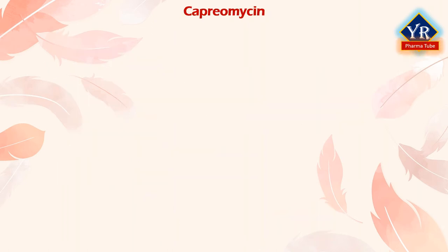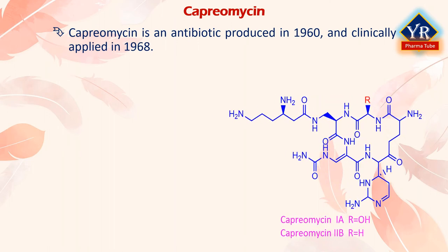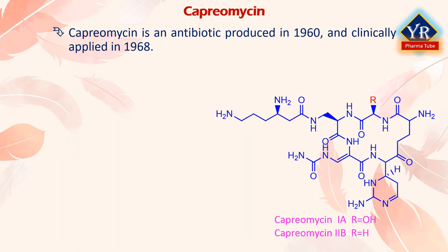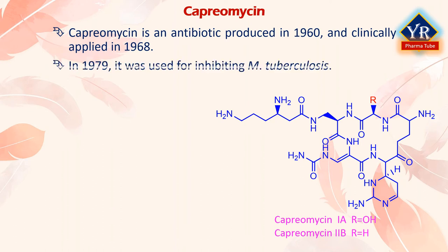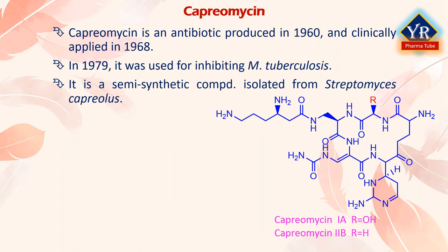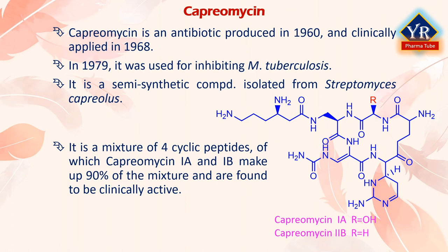The next drug is capreomycin. Capreomycin is an antibiotic which was produced in the US in 1960 and clinically applied in 1968. In 1979, it was used for inhibiting the growth of Mycobacterium tuberculosis. It is a semi-synthetic antibiotic that is isolated from the cultures of Streptomyces capreolus. Capreomycin belongs to the family of aminoglycoside medications. Four cyclic polypeptide capreomycins designated 1A, 1B, 2A, and 2B have been identified, of which capreomycin 1A and 1B make up 90% of the mixture and are found to be clinically active.